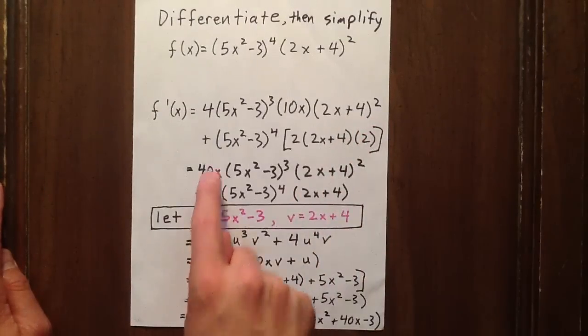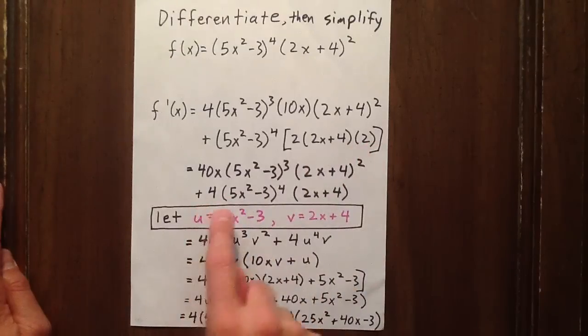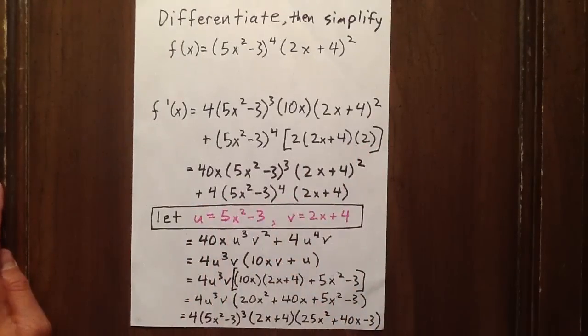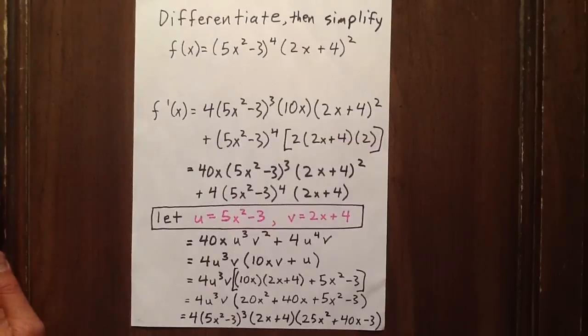Then we can multiply 2 times 2, which gives us 4, and we have 4 factors of 5x squared minus 3 and 1 factor of 2x plus 4.